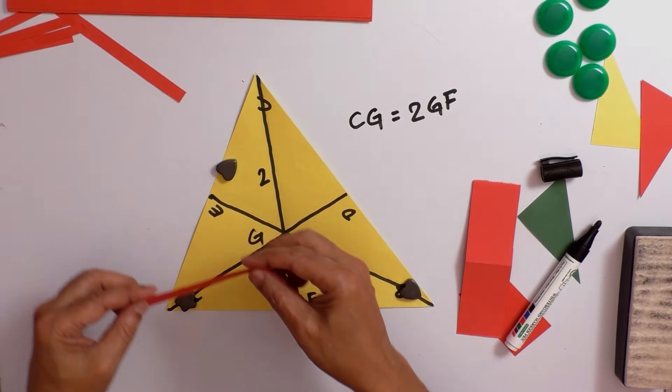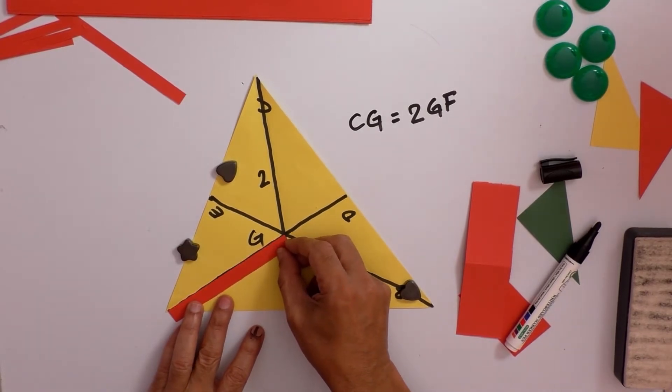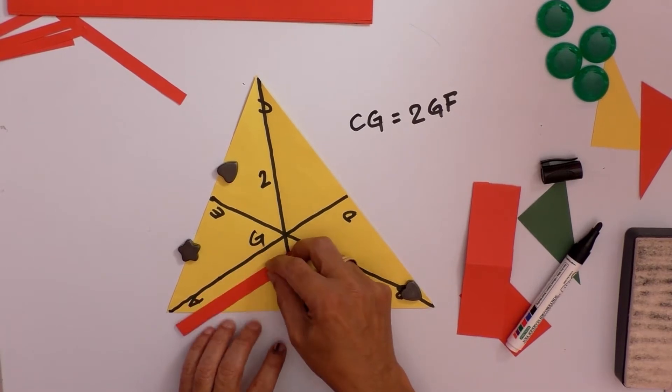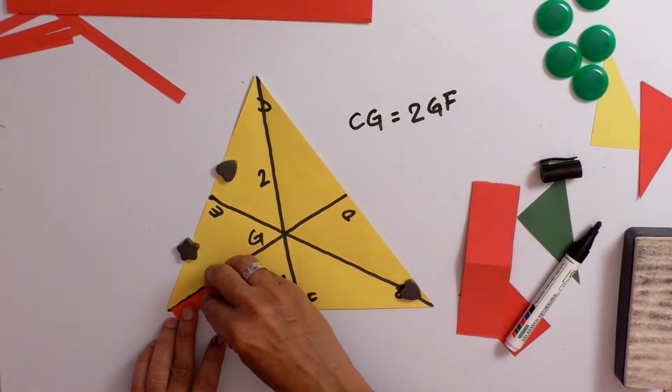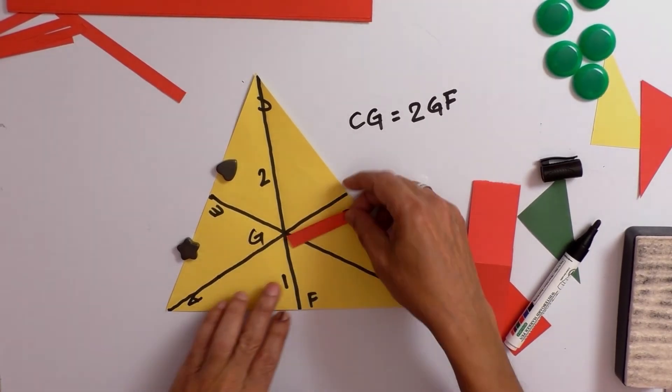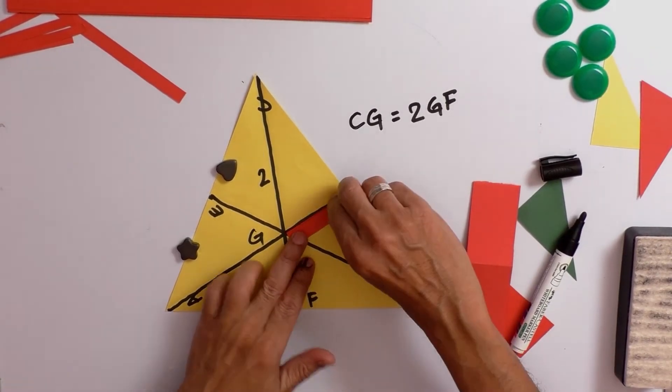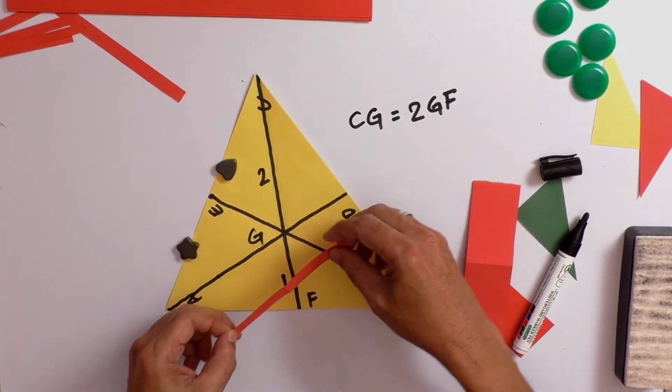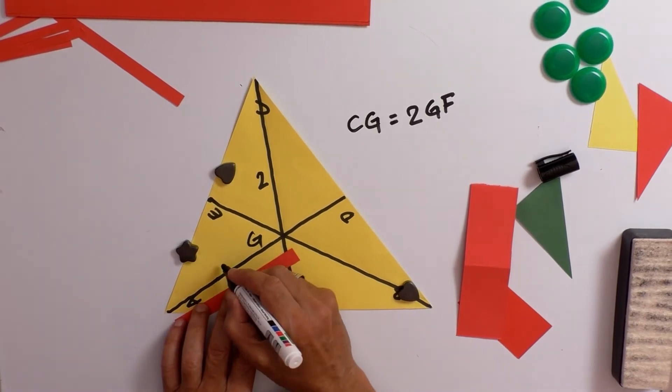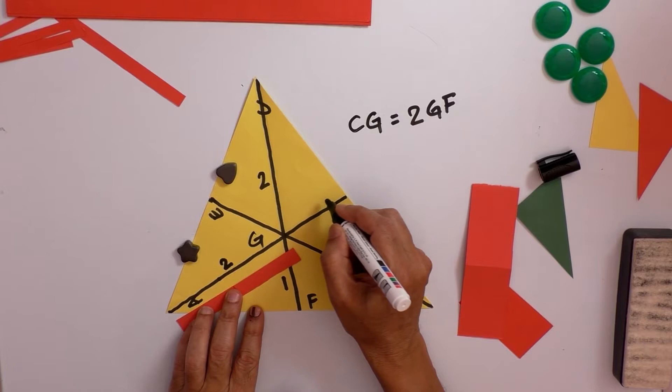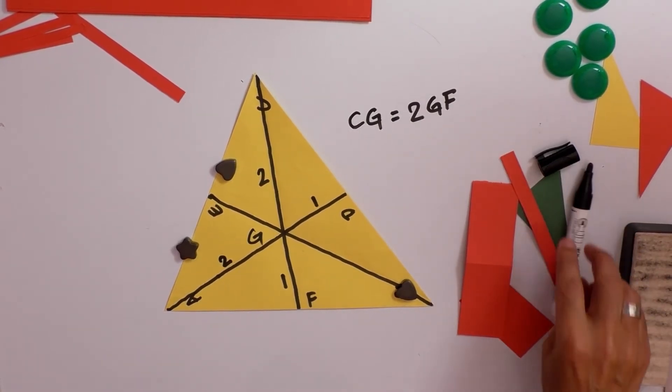The same thing can be done with the other sides also. Now take this side AG. Make the AG into two parts. Now you can notice that it is just GD. So that means now GD is one unit and then the next bigger unit is AG, so AG is two and GD is one.